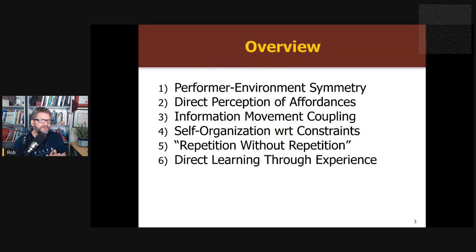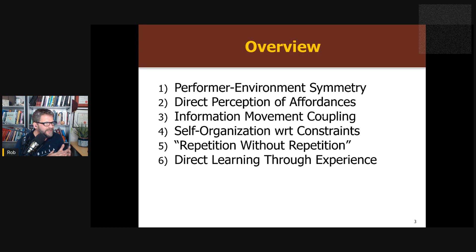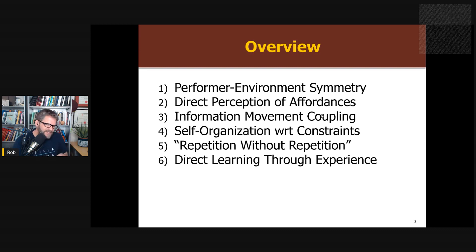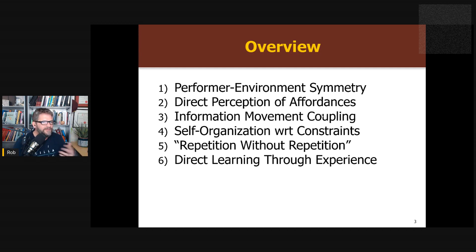The key principles of the ecological approach to skill are: performer-environment symmetry, direct perception of affordances, information-movement coupling, self-organization with respect to constraints, repetition without repetition, and direct learning through experience. Some people might say that's a lot of terminology, but let's go through each of these and show how they build on each other.